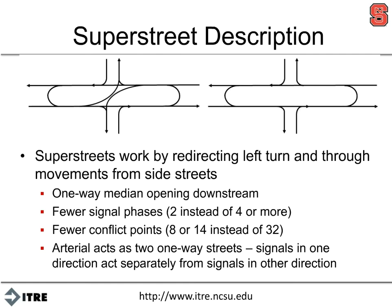Basically, the idea here is we have the arterial running east and west and we have the side street running north and south. All the time we're going to restrict the left and the through from the side street, so you'll notice we come up from the north and I can only turn right. So if I want to go through, I have to turn right, go to a u-turn opening downstream, turn left, and then turn right to go through. If you want to turn left, you turn right, go to the u-turn — if at a signalized intersection you wait for the light, if not you go when you get a gap — and then you turn left and go westbound.